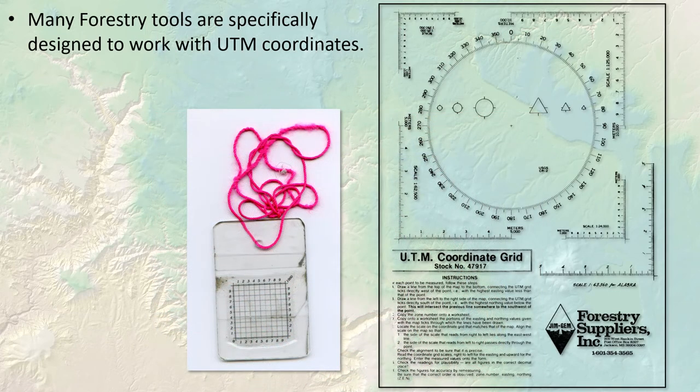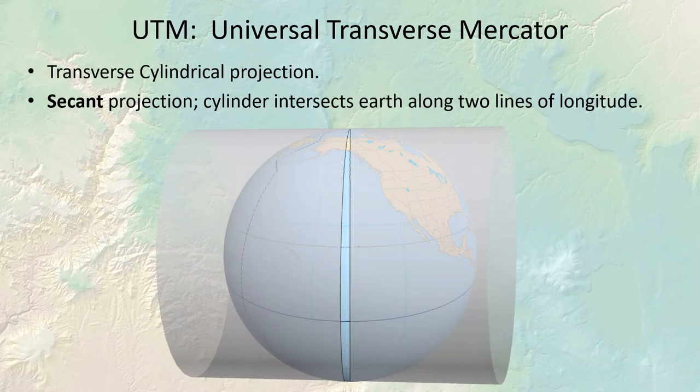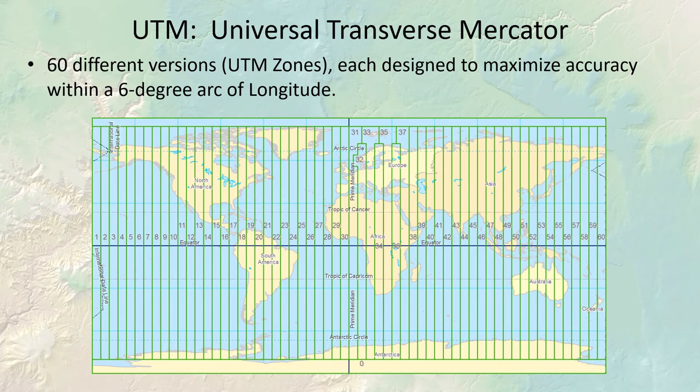Not all states have a state plane system, but many actually have several — Arizona has three. In ecological applications, I personally see UTM used most often. It works well for research or management projects that are less than a few hundred miles across, and works great for small projects like timber sales, wildland fires, or wildlife habitat studies. UTM has a long history in ecological management — the USGS quads, those old 1:24,000 topo maps, often had UTM lines printed right on them. It's a transverse cylindrical projection, a secant projection that intersects the earth along two lines of longitude. There are 60 different UTM zones, each designed for a six-degree longitudinal band.